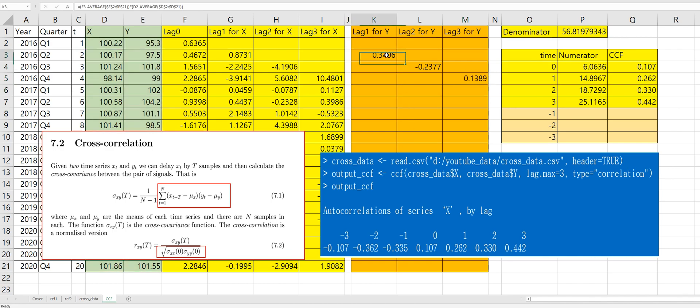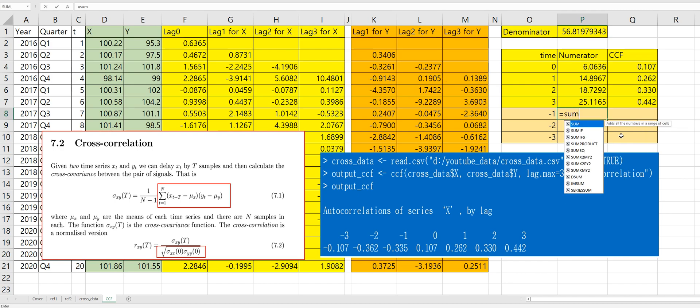So for lag four, we can apply formula. Then let's get sum of lag one for Y. Then let's get sum of lag two for Y. And sum of lag three for Y. Right, then we can use numerator over denominator.